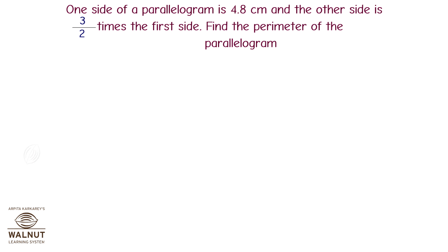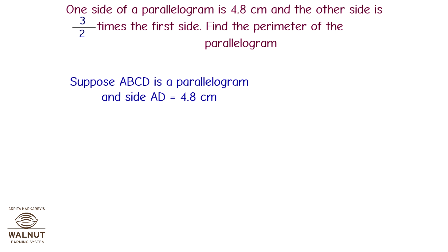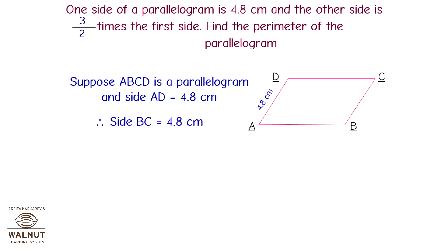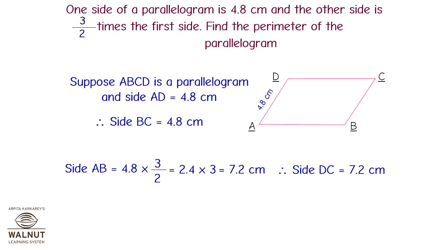One side of a parallelogram is 4.8 cm and the other side is 3/2 times the first side. Find the perimeter. Suppose ABCD is a parallelogram and side AD equals 4.8 cm. Therefore, BC equals 4.8 cm. Side AB equals 4.8 × (3/2) = 2.4 × 3 = 7.2 cm. The perimeter of quadrilateral ABCD equals 4.8 + 4.8 + 7.2 + 7.2 = 24 cm.